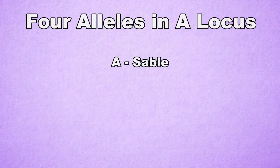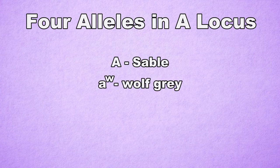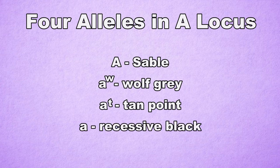There are four known alleles in the A-locus: Big A, which is sable; Little a-w, which is wolf gray; Little a-t, which is tan point; and Little a, which is recessive black.